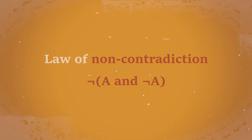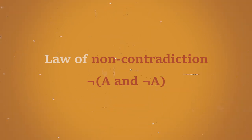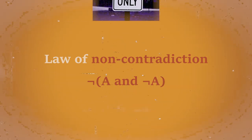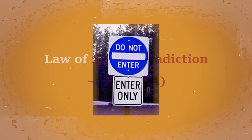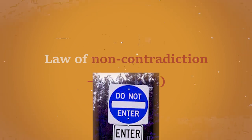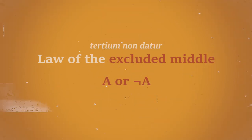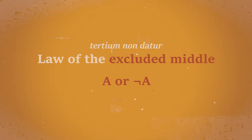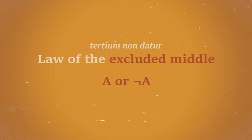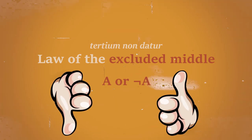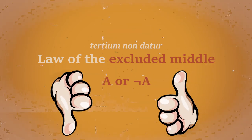The law of non-contradiction states that contradictory statements cannot be both true, as in A and the negation of A. The law of the excluded middle, also called tertium non datur — which is Latin for 'the third is not given' — states that any statement is either true or false; there's no third option.